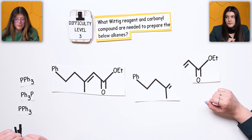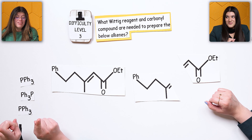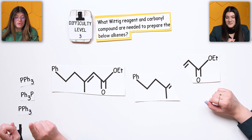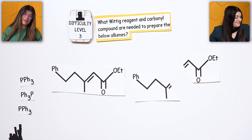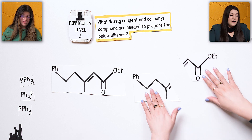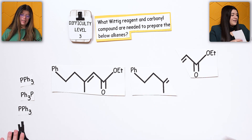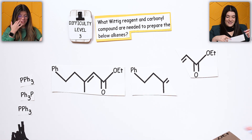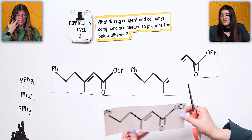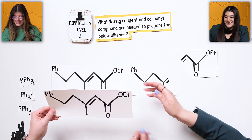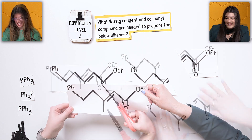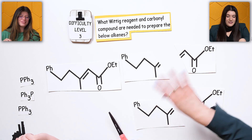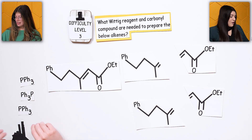Which one is the Wittig reagent (ylid) and which one is the carbonyl? The preferred choice is that we want the ylid to have an electron withdrawing group. We can draw each one out and do a little comparison. Let's do the two different options.